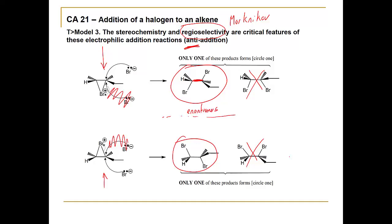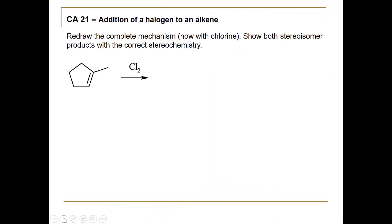Let's look at a complete example of this mechanism, starting from scratch with chlorine, drawing it out completely, and showing both stereoisomer products with correct stereochemistry. Write out chlorine-chlorine, and write out one lone pair that will be used for the back attack. It's helpful to think that the chlorine on the right would be delta negative and the chlorine on the left delta positive — so that's where the pi bond will attack. The pi bond acts as a nucleophile, with a back attack of the chlorine using the lone pair of electrons. That bond is broken, releasing a chloride into solution.